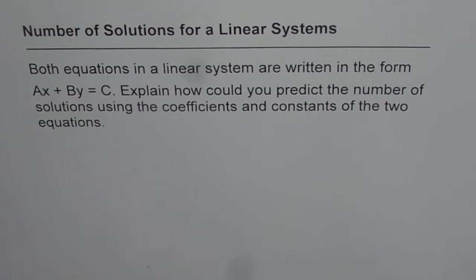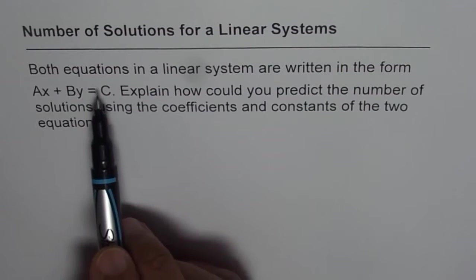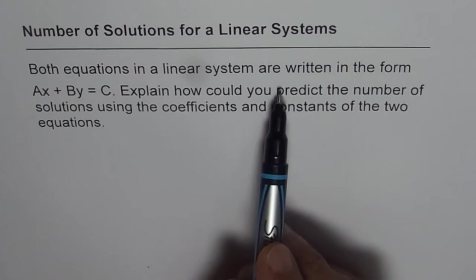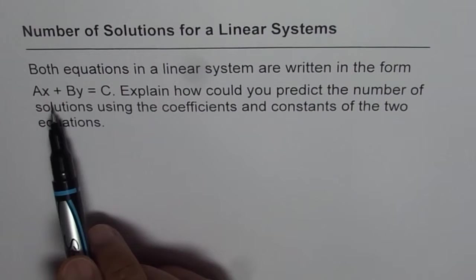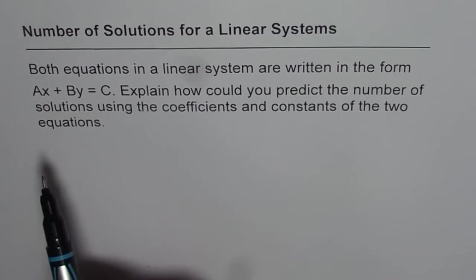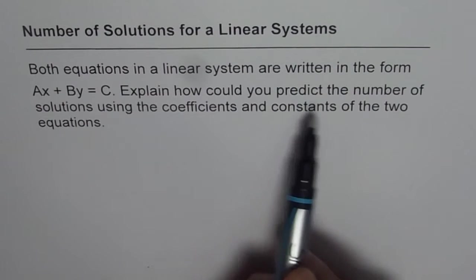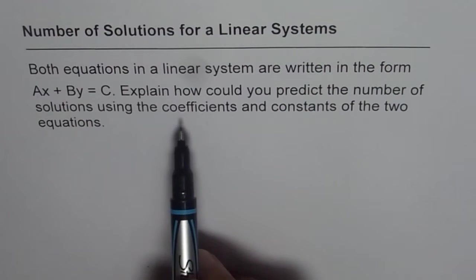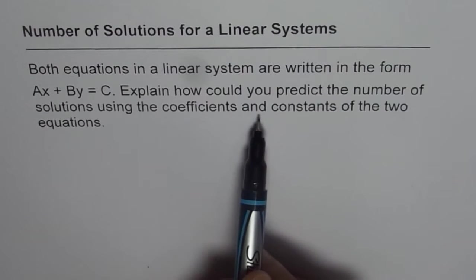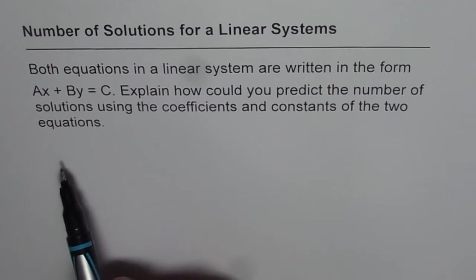I'm Anil Kumar and now let us understand how to find the number of solutions for a linear system. Both equations in a linear system are written in the form AX plus BY equals to C. Explain how could you predict the number of solutions using the coefficients and constants of the two equations.